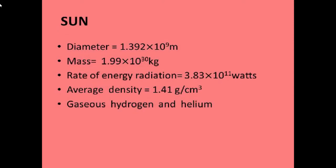Diameter of the Sun is equal to 1.392 × 10^9 meters. Its mass equals 1.99 × 10^30 kg. Rate of energy radiation is equal to 3.83 × 10^11 watts. It is the rate with which energy is radiated.